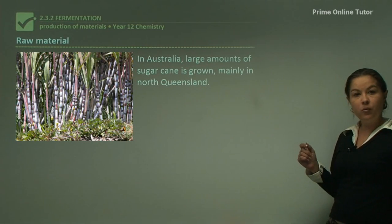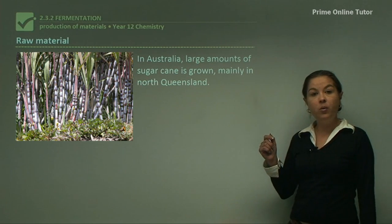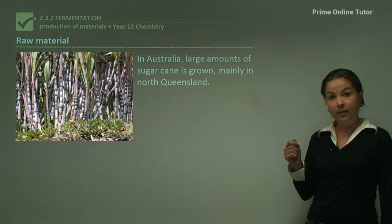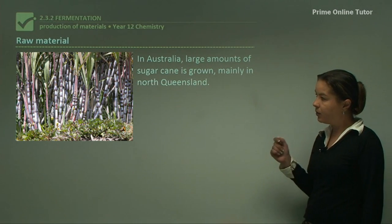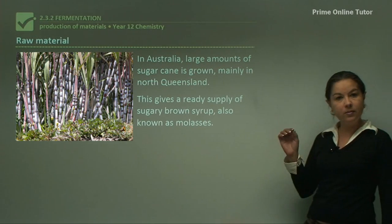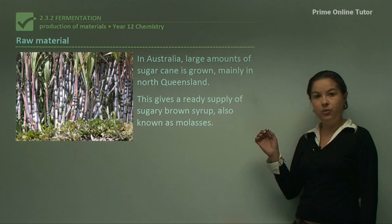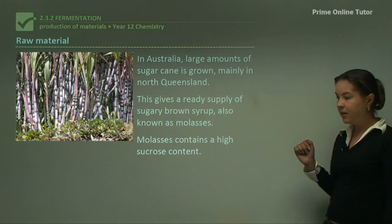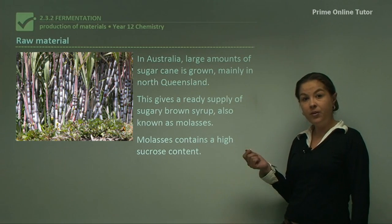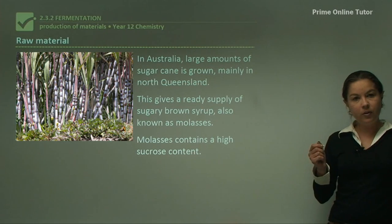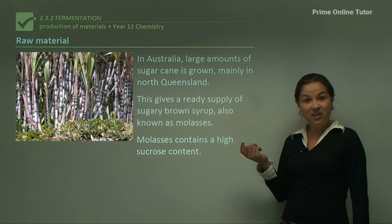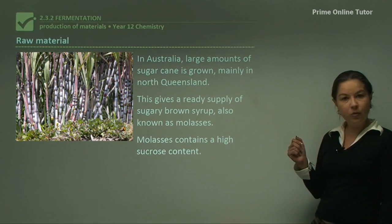Looking at the raw material for fermentation: in Australia, for example, we grow a lot of sugarcane, mainly up in North Queensland. It grows really well in the heat and humid conditions and we get a lot of sugar from sugarcane. We also get something called molasses, which is a sugary brown syrup with a high sucrose content — perfect for producing ethanol and alcoholic beverages. If you've heard of Bundaberg rum from North Queensland, that's where it comes from — North Queensland sugarcane.